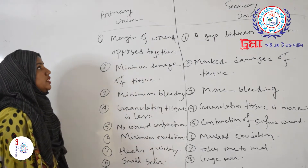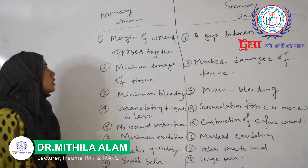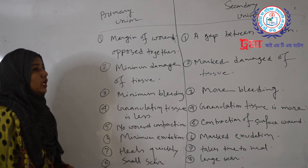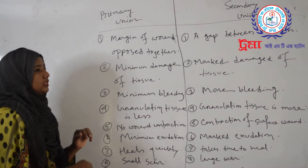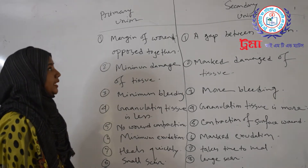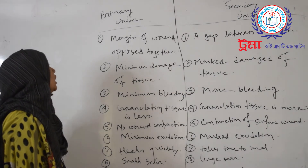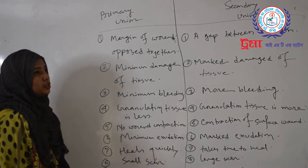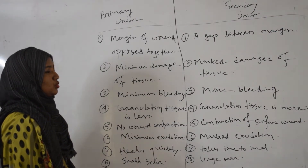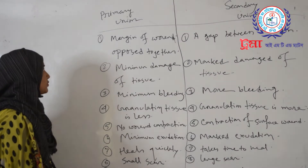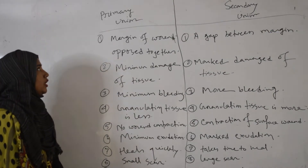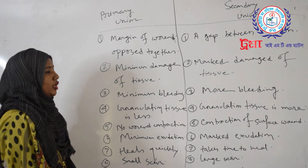Primary union versus secondary union. In primary union, the margins of the wound are opposed together. In secondary union, there is a gap between the margins. Primary union involves minimal damage of tissue; secondary union involves marked damage of tissue. Primary union has minimum bleeding; secondary union has more bleeding.